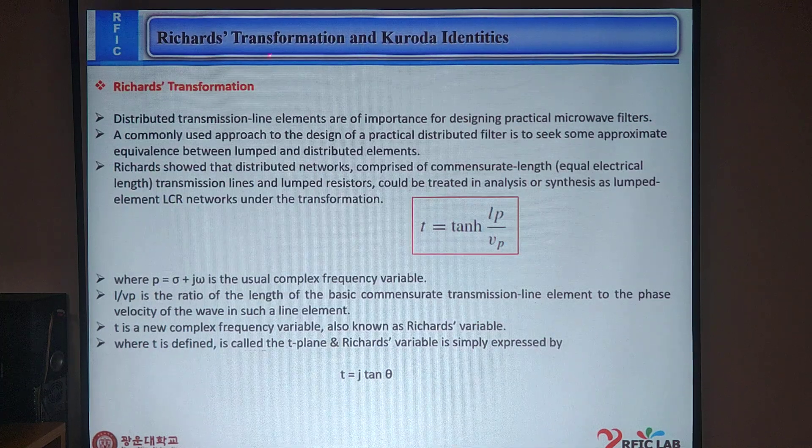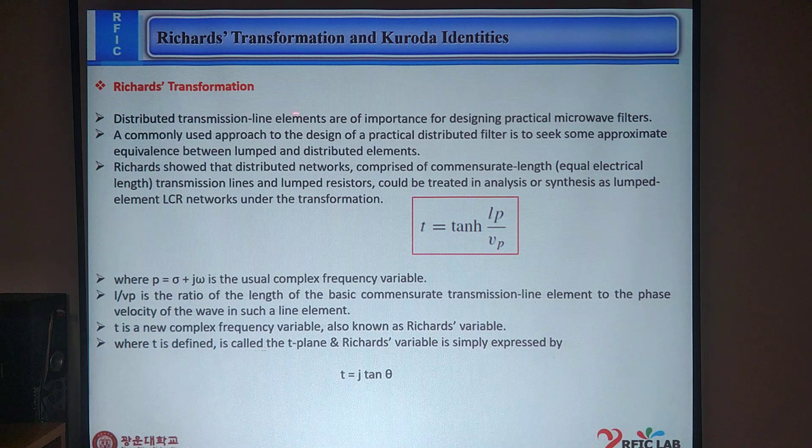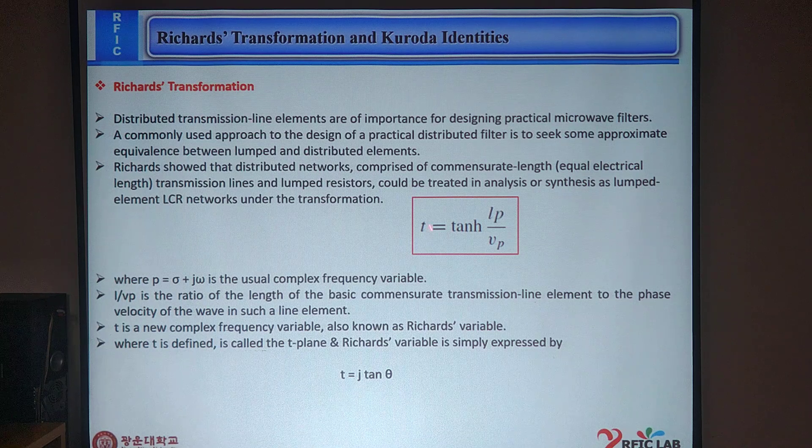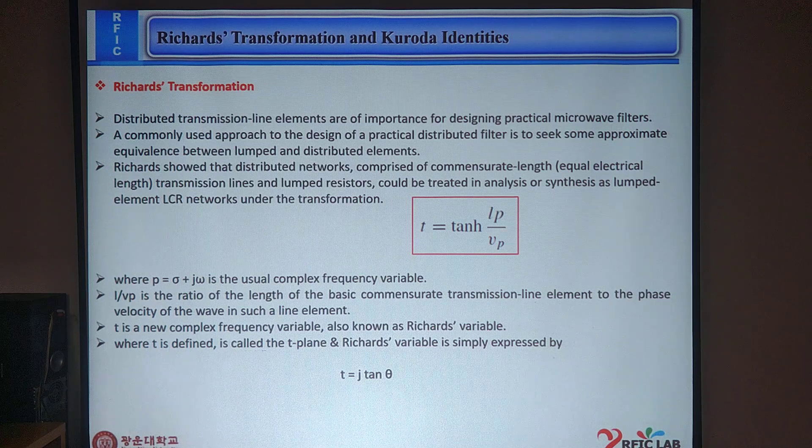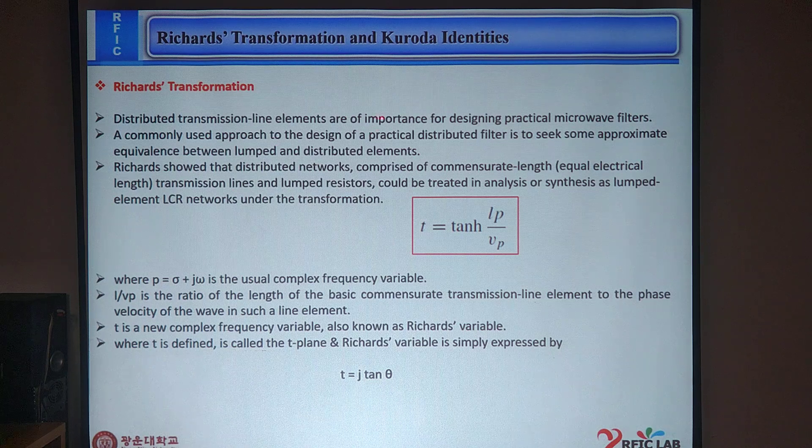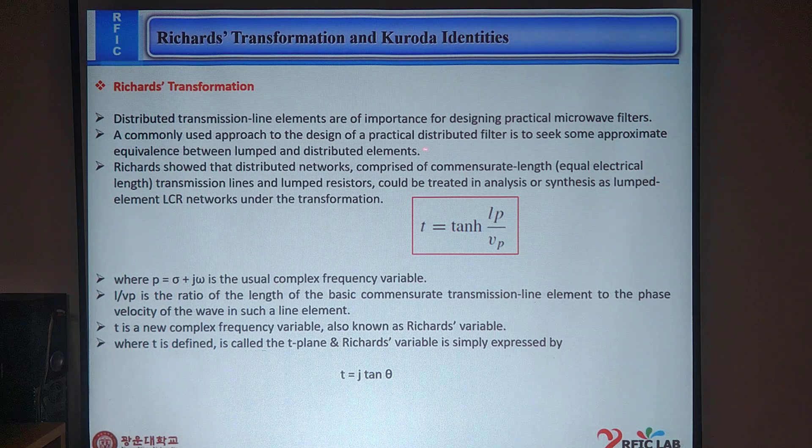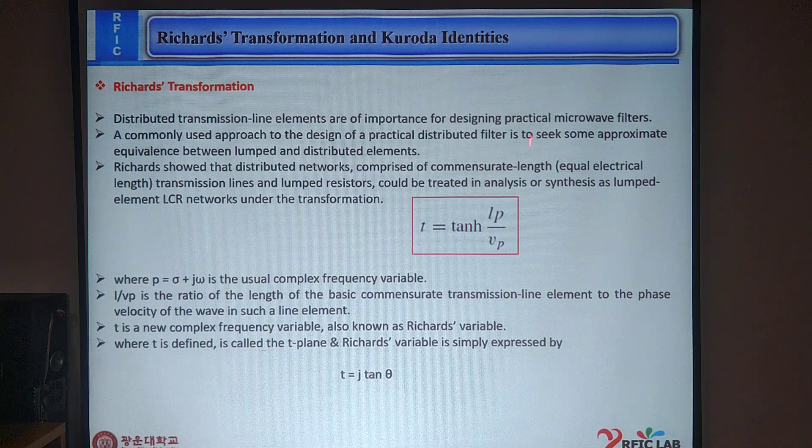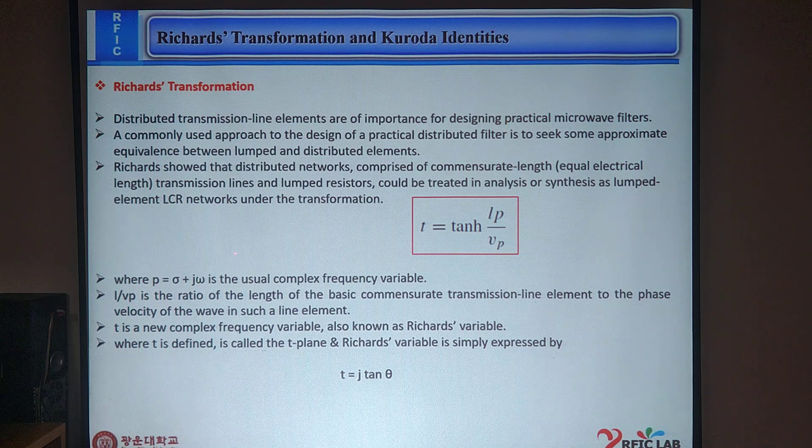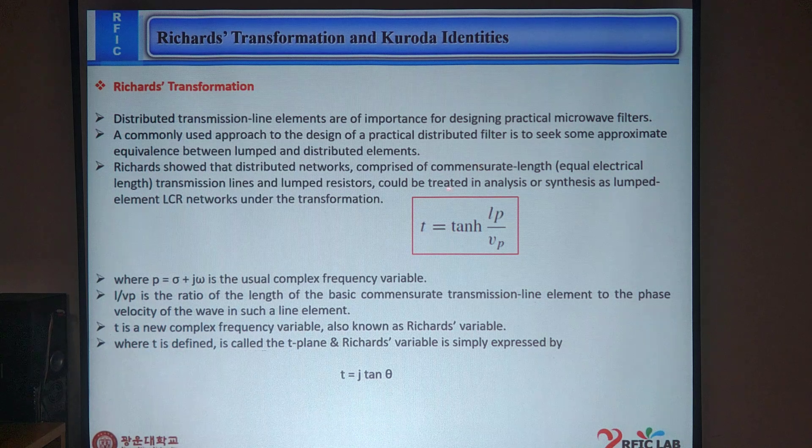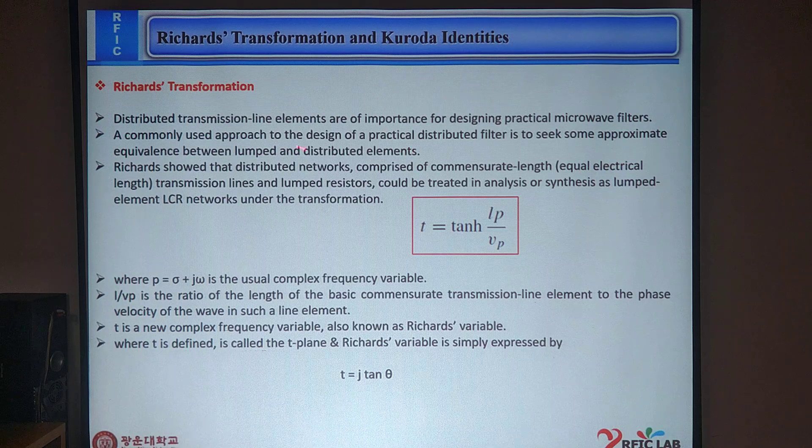Next topic is Richard transformation and Kuroda identities. Richard transformation. What exactly is the meaning of Richard transformation? It can be expressed by τ = tanh(lp/Vp). Distribution transmission line networks are important for designing practical microwave filters as we know. A commonly used approach to design a practical distributed filter is to seek some approximate equality between lumped and distributed elements. Richard showed that distributed networks comprising commensurate length, equal electrical line, transmission line and lumped resistor could be treated in analysis or synthesis as lumped element LCR network under the transformations.